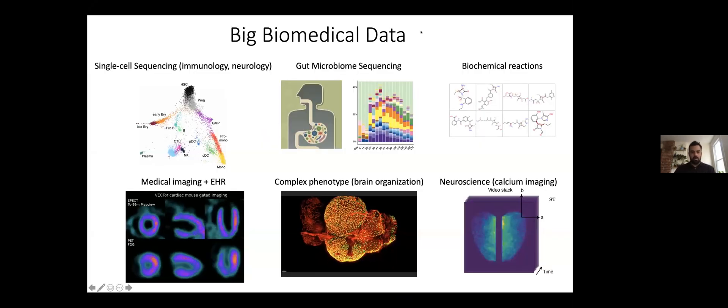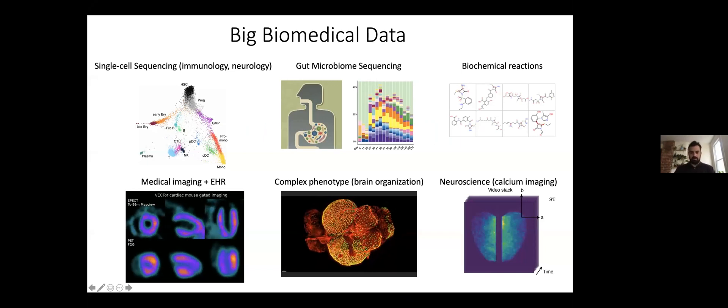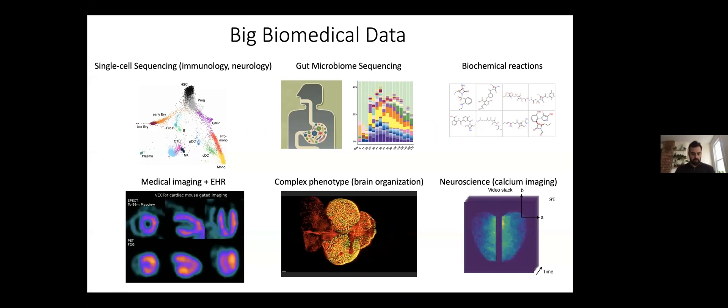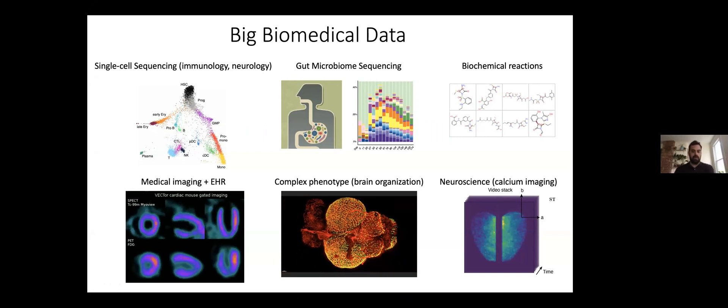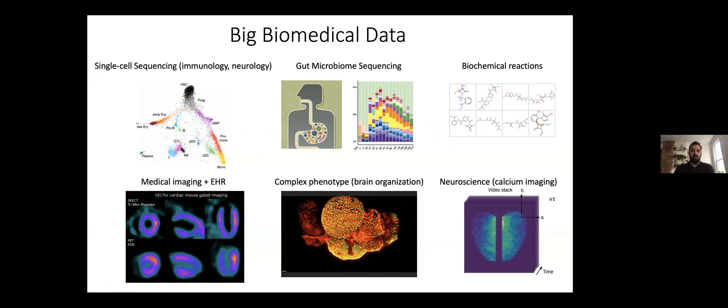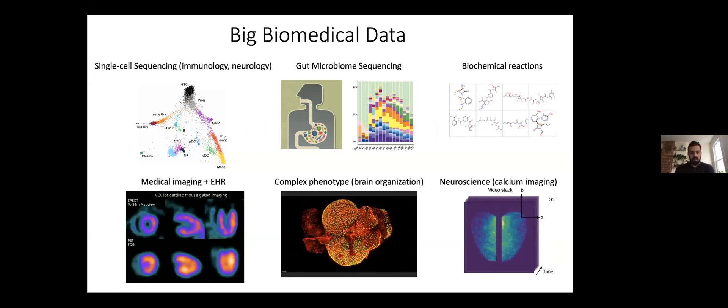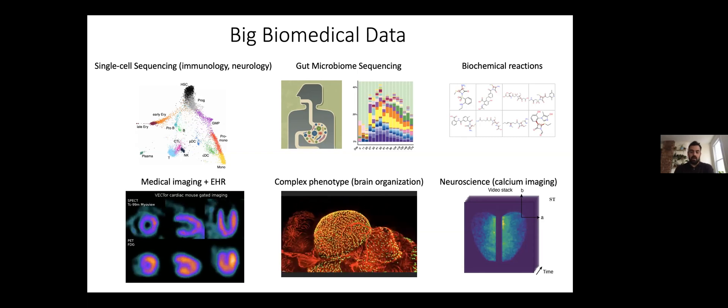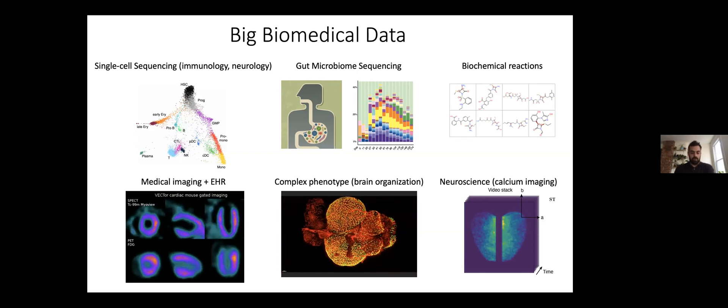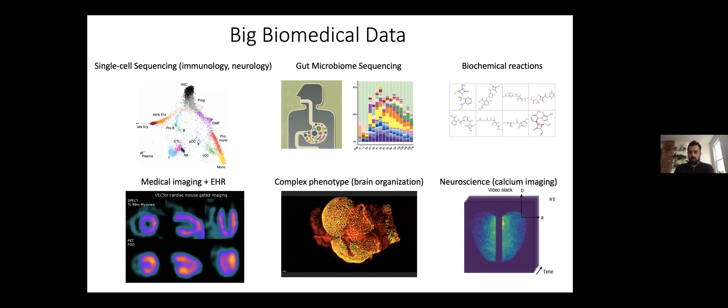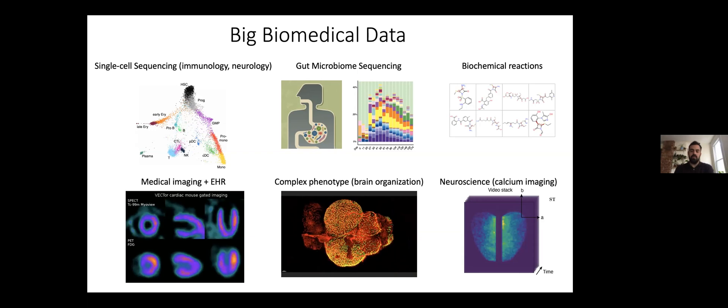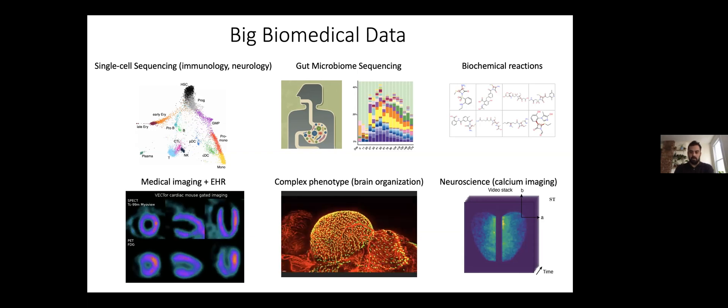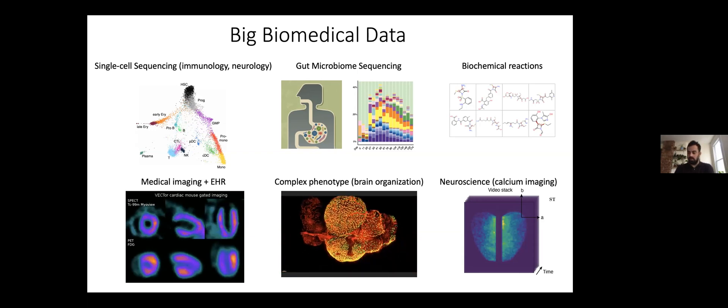In our lab we work with all kinds of data sources, and in general these are big biomedical data. We work a lot with single cell RNA sequencing, but also microbiome sequencing, medical imaging, electronic health records, and other imaging sources. I also work in neuroscience, particularly on calcium imaging, and we do some work on predicting biochemical reactions.